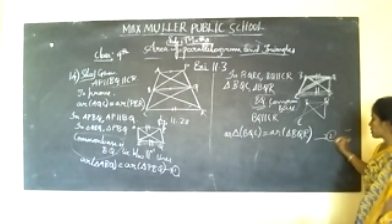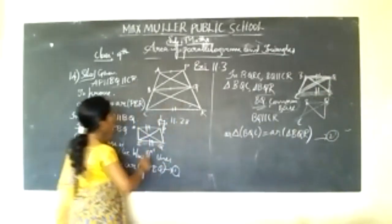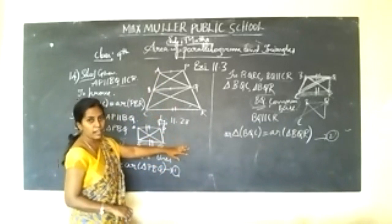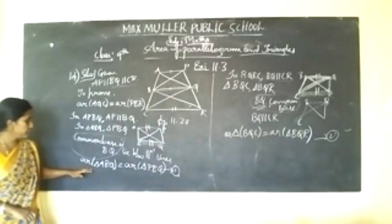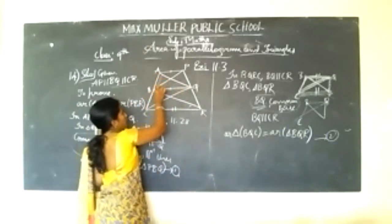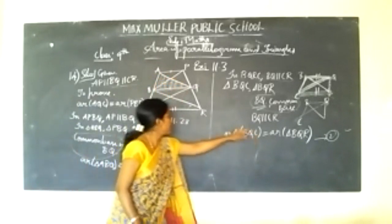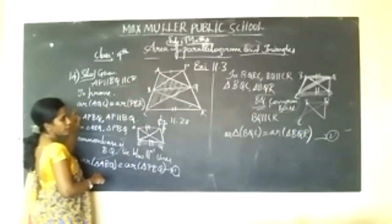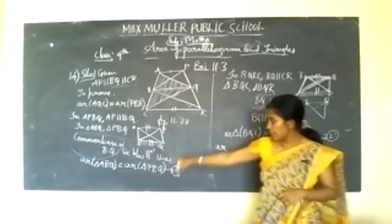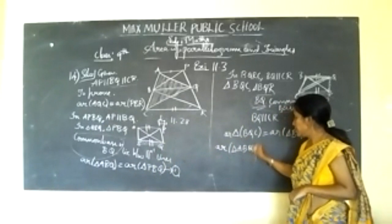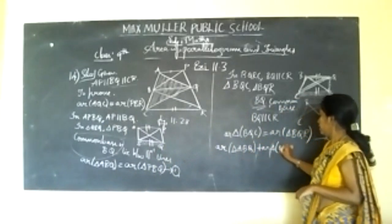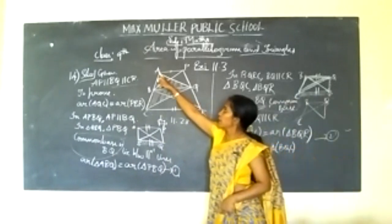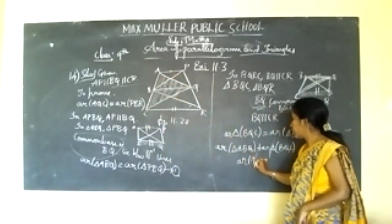Now add equations 1 and 2, adding LHS with LHS and RHS with RHS. The LHS gives area of triangle ABQ plus area of triangle BQC. When you add these, you get area of triangle AQC.